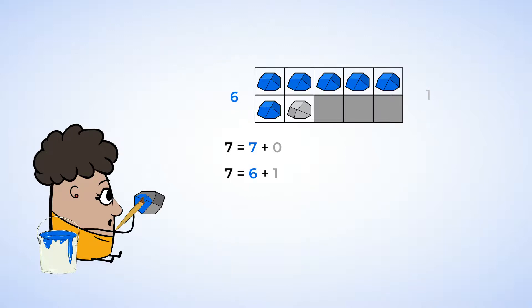Should we flip over another rock? After all, we have to discover more ways to make seven. Now we still have five blue rocks. That's easy to see since it's in a ten frame. And now we have two silver rocks. So seven equals five plus two. What if we try four blue rocks? That means we have three silver rocks, and we can write that as seven equals four plus three.